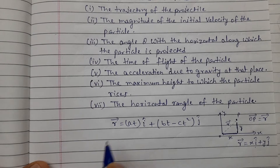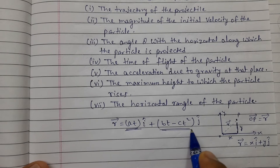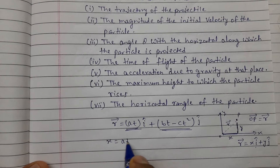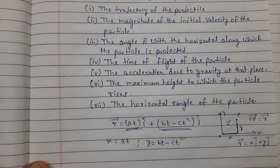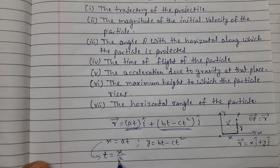Now compare: r vector equals x·î + y·ĵ. So the x value will be the coefficient of î, which is at. The y value will be bt - ct². So x equals at, meaning t equals x/a. Now put this value of t to find the trajectory.